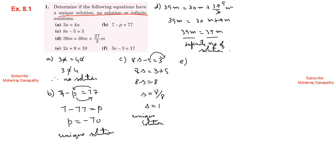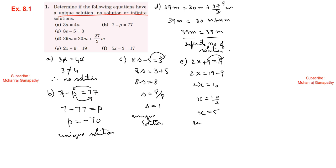Part e: 2x plus 9 equals 19. Moving constant terms to one side: 2x equals 19 minus 9, so 2x equals 10. Therefore x equals 10 divided by 2, which is equal to 5. It has a unique solution.